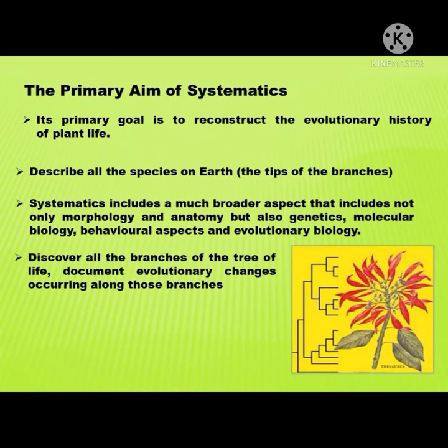The primary aims of systematics. First, its primary goal is to reconstruct the evolutionary history of plant life. Second, to describe all the species on Earth. Third, systematics includes a much broader aspect that includes not only morphology and anatomy, but also genetics, molecular biology, behavioral aspects, and evolutionary biology. Lastly, to discover all the branches of the tree of life and document evolutionary changes occurring along those branches.